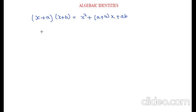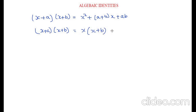Let me take the left hand side, which is (x + a) in one bracket and (x + b) in another bracket. We are going to multiply the first bracket with the second bracket. Taking the first term x and multiplying with (x + b), then multiplying a with (x + b): x times x is x², x times b is bx, a times x is ax, and a times b is ab.